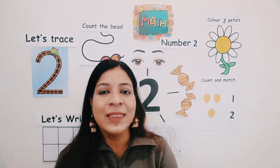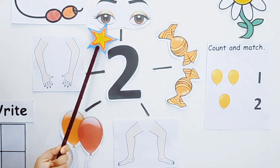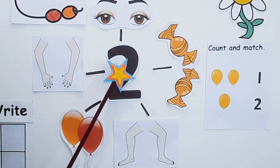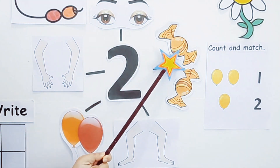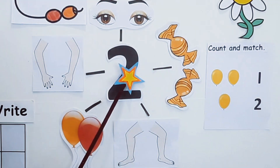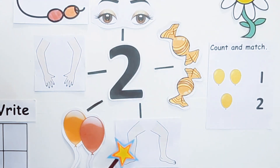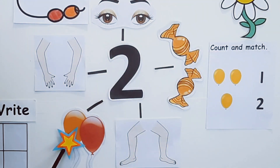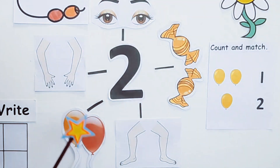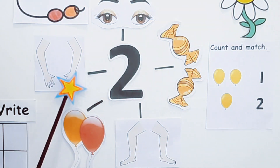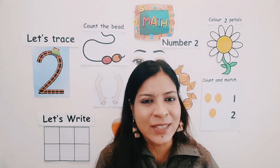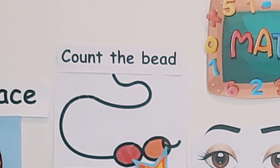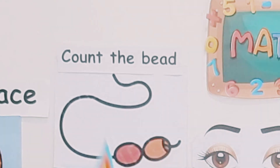Now let's count the pictures. Let's see how many eyes there are: 1, 2 — 2 eyes. Let's count the toffees: 1, 2 — 2 toffees. Now let's count the legs: 1, 2 — 2 legs. Now let's count the balloons: 1, 2 — 2 balloons. Now let's count the arms: 1, 2 — 2 arms. Now let's count the beads in the string: 1, 2 — there are 2 beads.